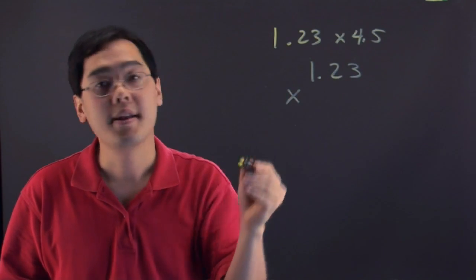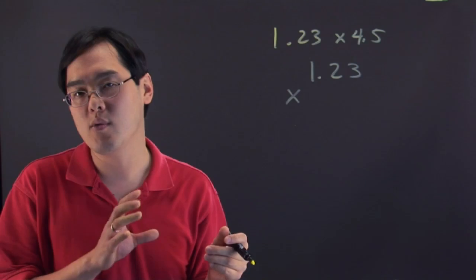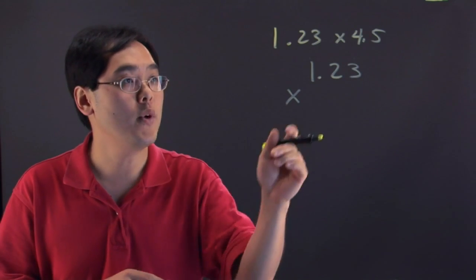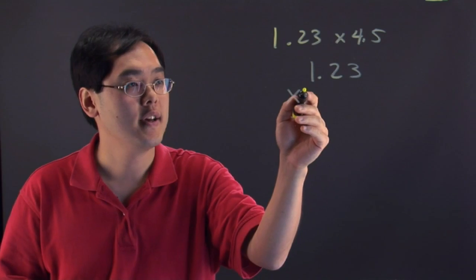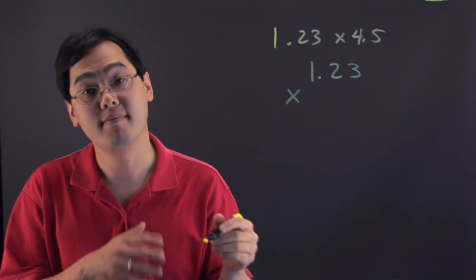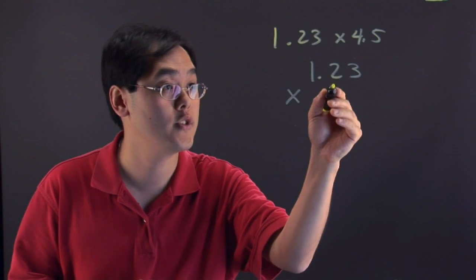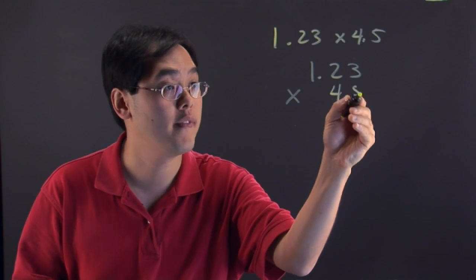You have 1.23 times. Now this is where folks might want to do things a little bit different, but I encourage you to do it the same way. They want to line up 4.5 where the decimals line up, but I tell you here you do not want to do that. You actually want to write 4.5 just like this.